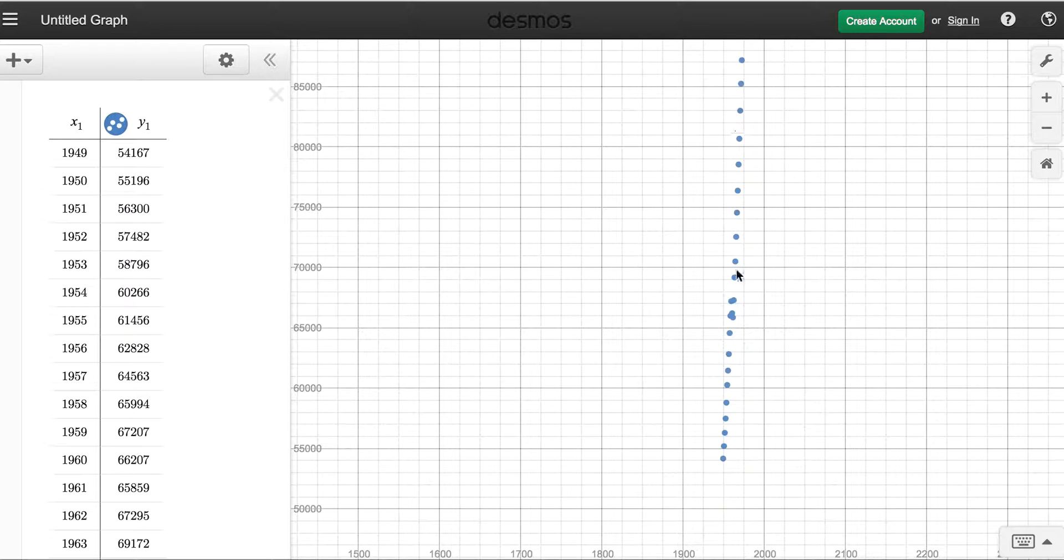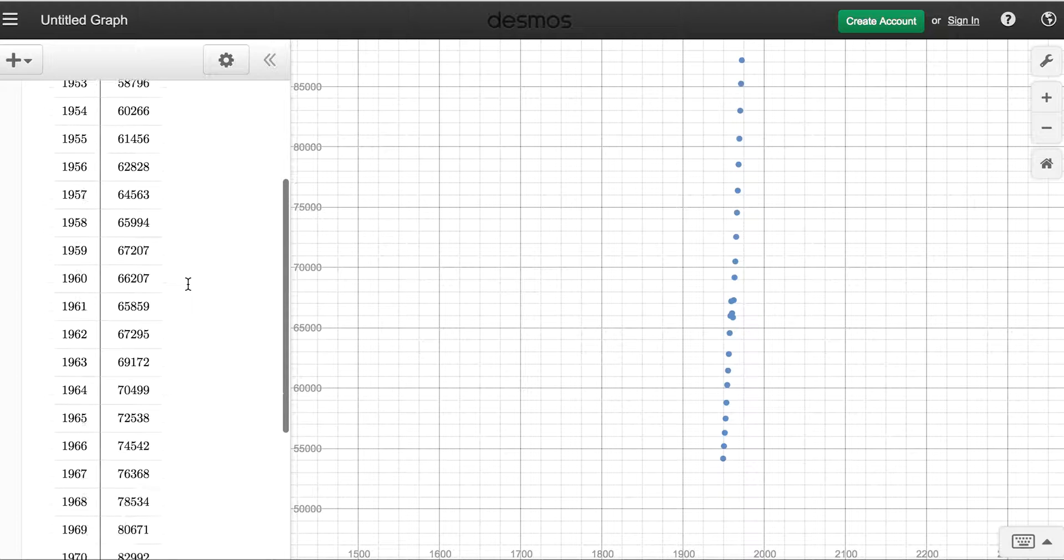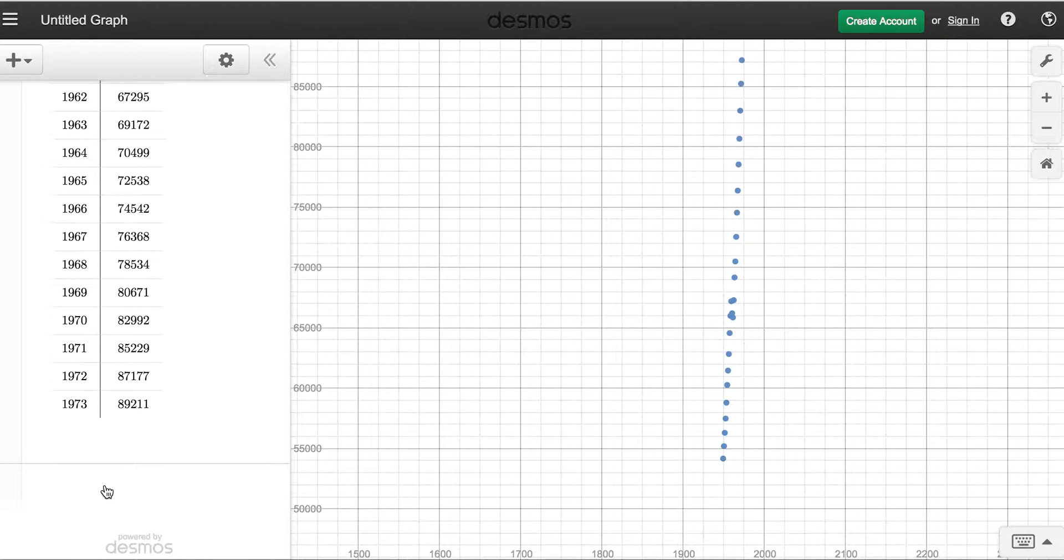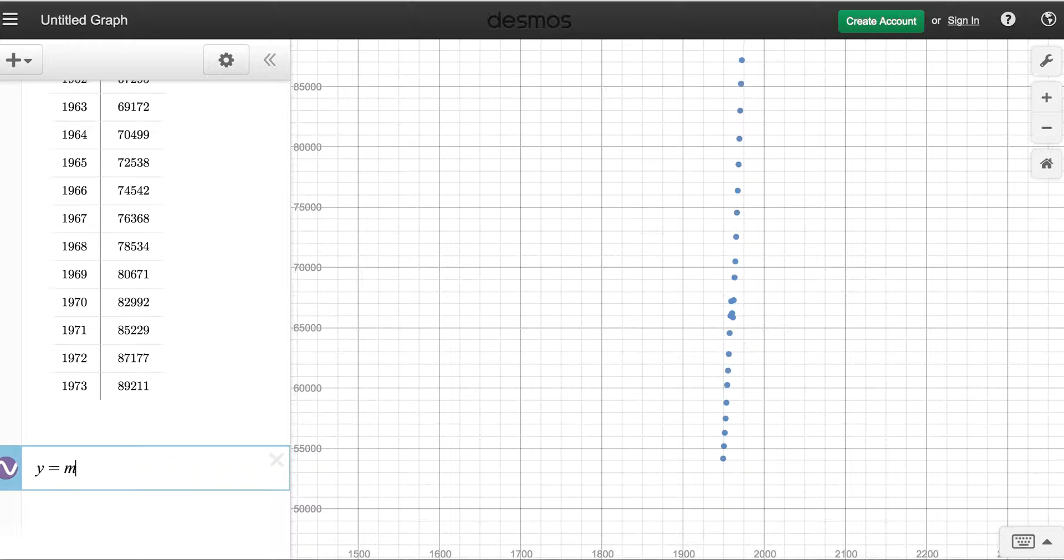Alright, as I look at this data, it looks to me like it is pretty linear. So the parent function I'm going to use for this is linear. Now remember that a linear function is y equals mx plus b. I just typed that in there so you could remember what all the pieces were. That's not actually going to get you the regression.